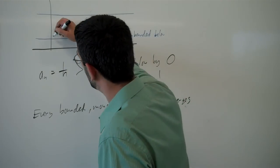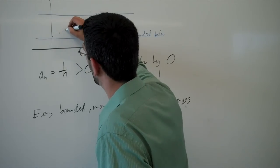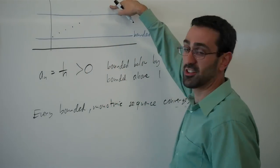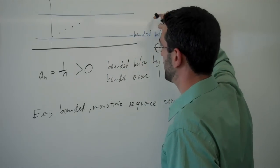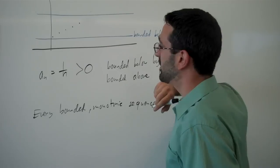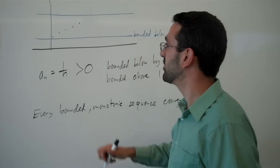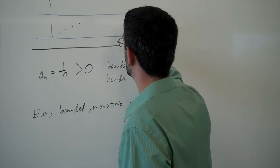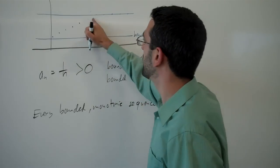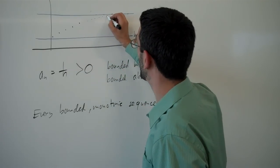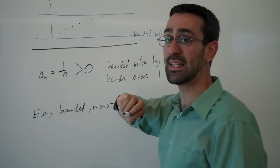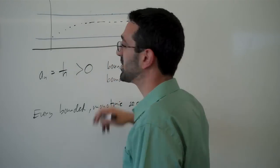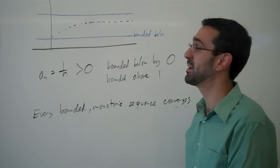So we know that our sequence is always getting larger and larger, but can never get larger than this blue value, than this output value. So we have two options. Either we get to that value and then stay there, or we slowly approach that value but never quite get there, or we approach some value that's even smaller and we just didn't realize that there was an even lower bound.